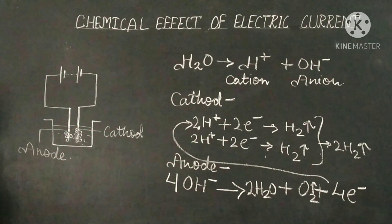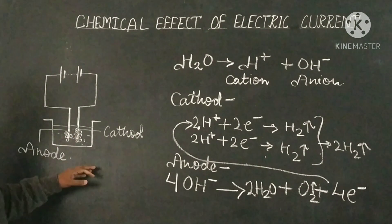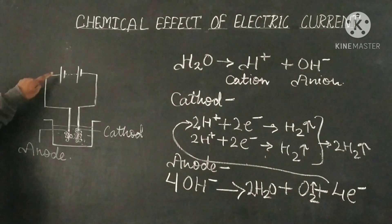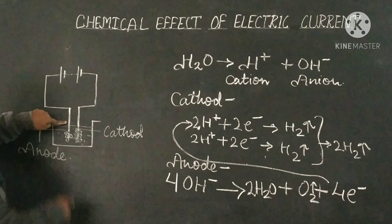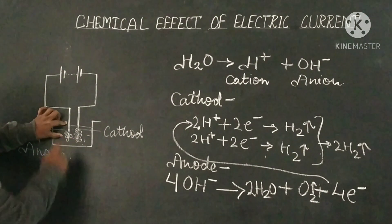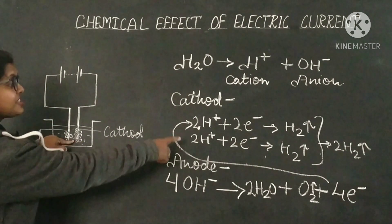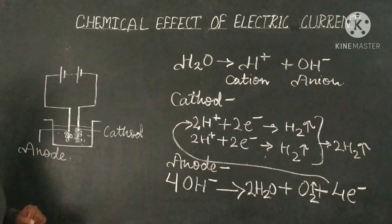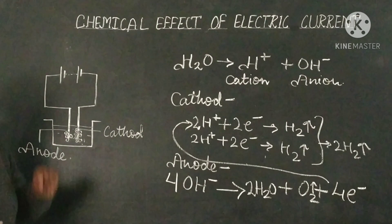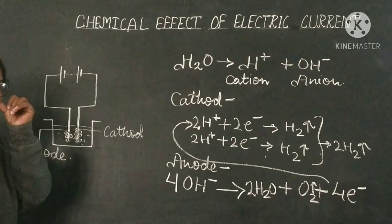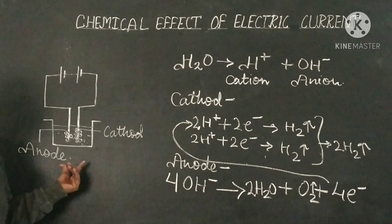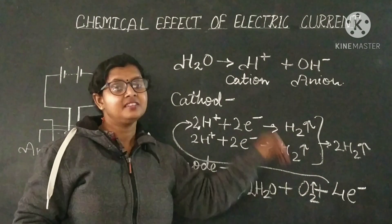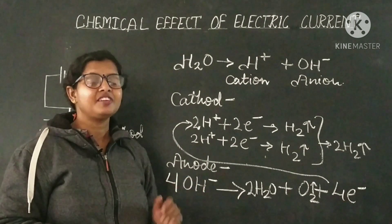To be clear: from the anode, four electrons are released into the solution and are attracted to the cathode by the hydrogen ions. This movement of electrons from anode to cathode is what we call electric current. So current flows from anode to cathode through the solution, confirming that acidified water is a conductor of electric current. In this process, it also releases hydrogen gas at the cathode and oxygen gas at the anode. That is the chemical effect of electric current.